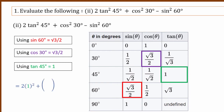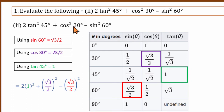Substituting: tan squared 45 is 1 squared equals 1. Cos squared 30 is root 3 by 2 squared. Sin squared 60 is root 3 by 2 squared. We simplify using the substitute method.